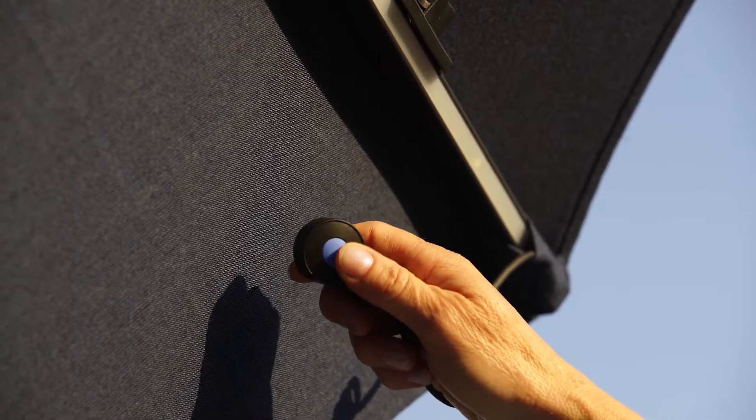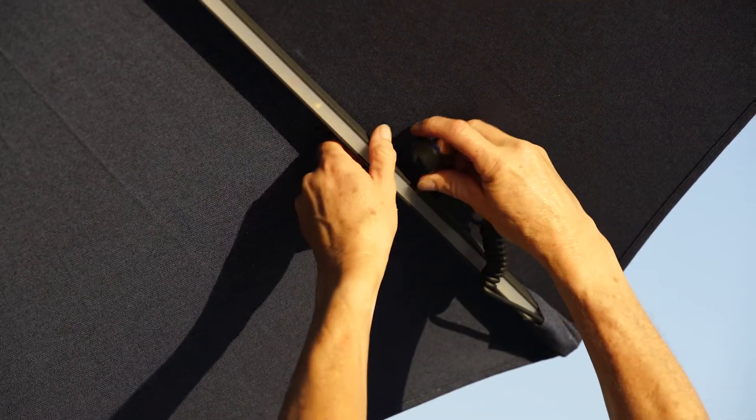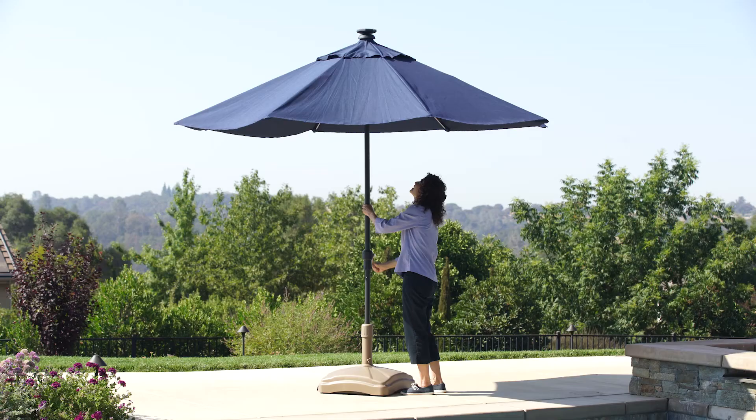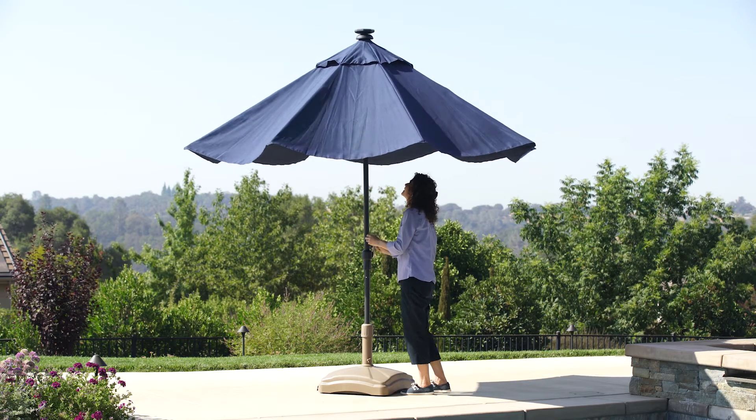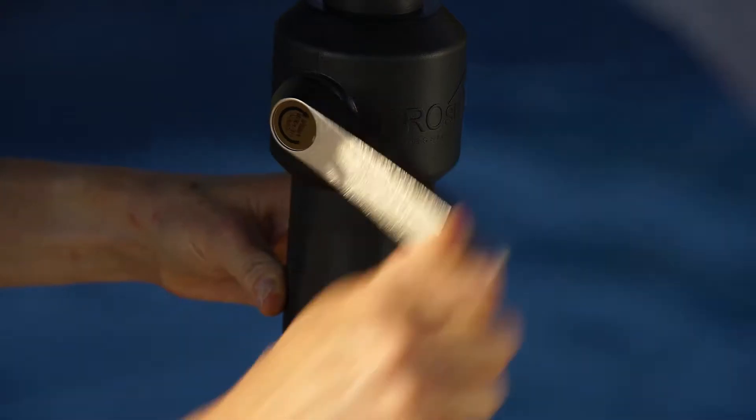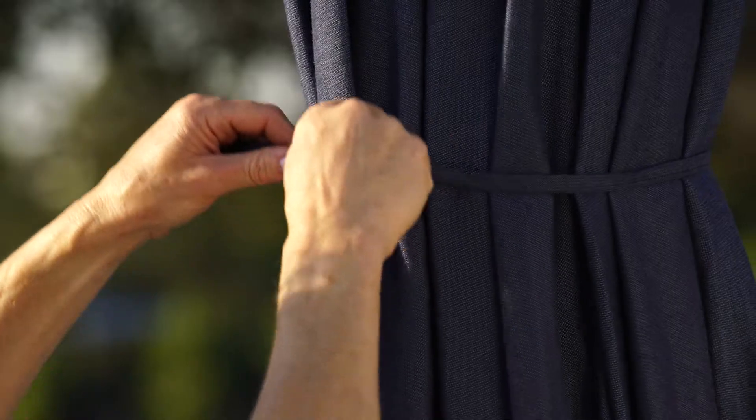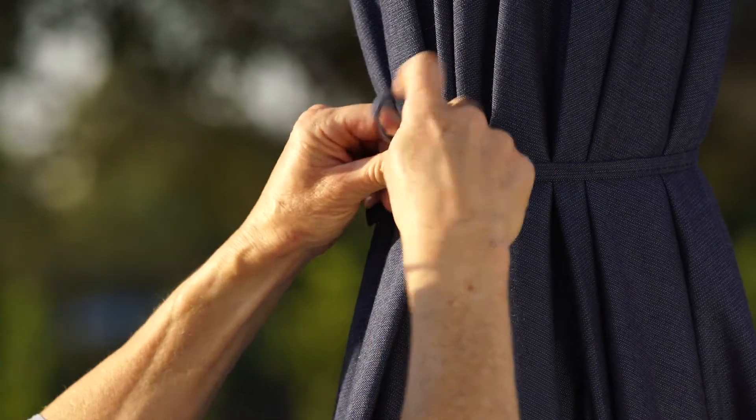To close the umbrella, turn off the lights and secure the switch in the holder. Turn the handle counterclockwise until the canopy is upright. Continue to crank counterclockwise until fully closed. Use the tie straps on the outside of the canopy to secure in the closed position.